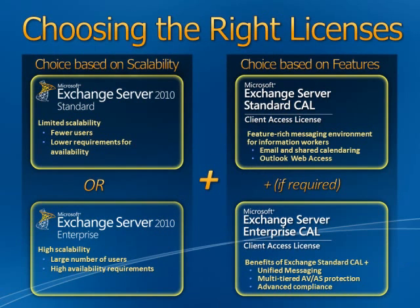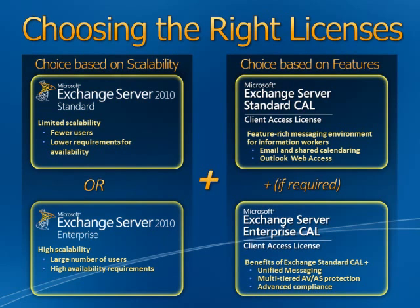How do you choose between the different editions of server and the Standard and Enterprise CALs? The different editions are based on scalability. The Standard Edition is aimed at companies that don't have many users, don't have requirements for very large mailboxes, and have availability requirements but not as critical as the larger company. Whereas the Enterprise Edition is aimed at large companies with large numbers of users, large mailboxes, and high availability requirements — multiple Exchange servers running together needing to deal with failover type situations.